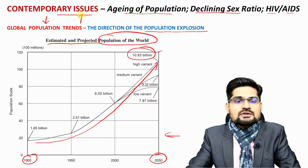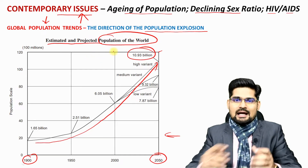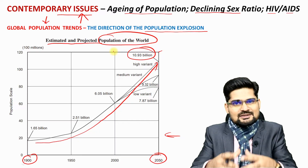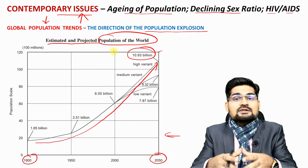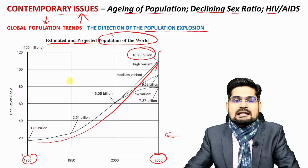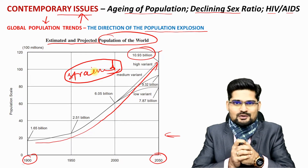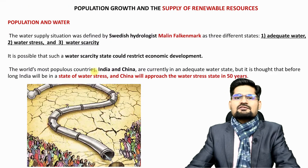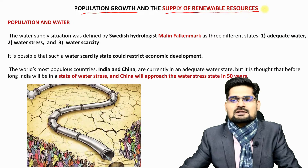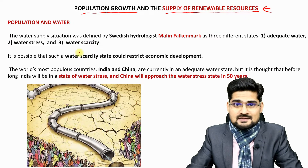That's where the word 'issues' and 'challenges' come into the picture with population. As population grows, the need for sustenance and the need for resources will grow multifolds as well. It means the population and resource relationship is going to be strained — we are going to be under stress. Population growth and supply of renewable resources is one of the core aspects where we are talking about contemporary challenges in population.